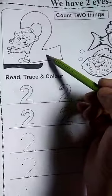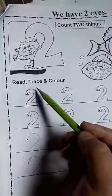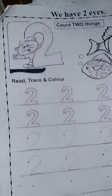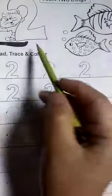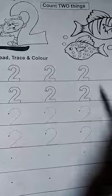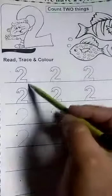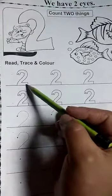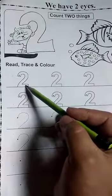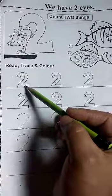And here is the number two. Read, trace and color. You have to read number two, trace and color. This is the number two. You can write on paper with pencil and color.